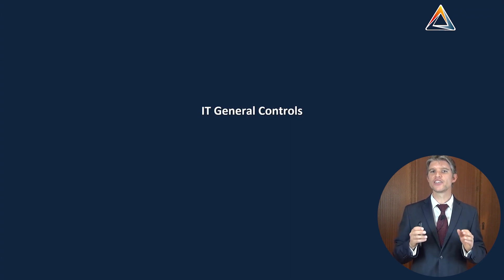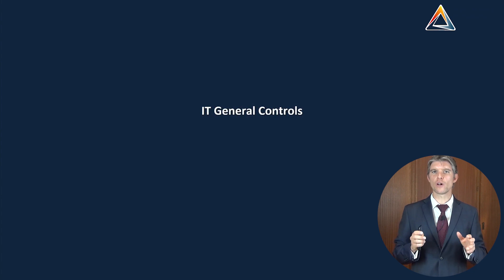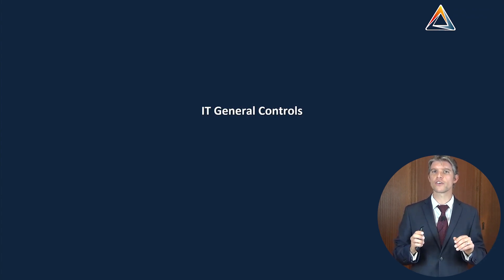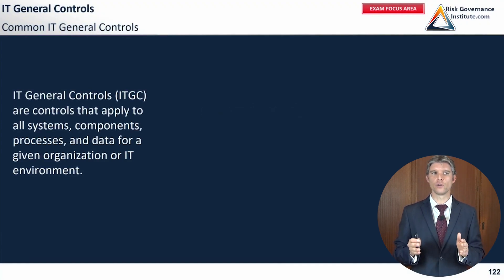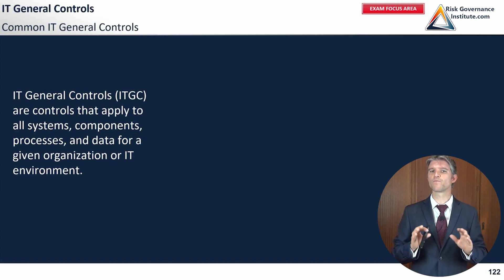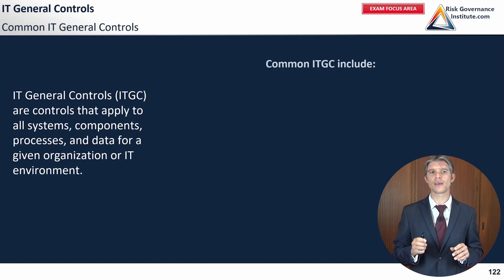We're now looking at IT general controls. This is a type of control that internal auditors look a lot at, and it's probably the type of control that an accountant, finance team, or even an external auditor might care about most. IT general controls are controls that apply to all systems, components, processes, and data for a given organization or IT environment. It's still a little vague, but we're going to get to some examples.